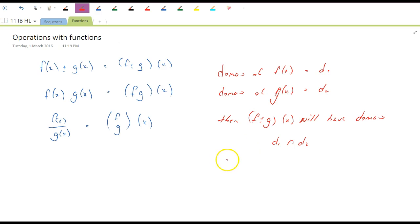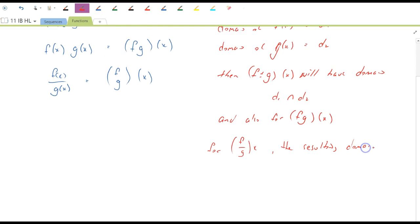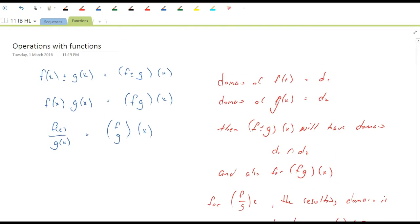And also for fg(x), so fg(x) will also have the intersecting domain of d1, d2. So for f over g of x, the resulting domain after that division takes place is also d1 intersection d2, but we also have to check for values of x where g of x is 0, so we need to exclude those from our domain. Okay, so that's the operations.